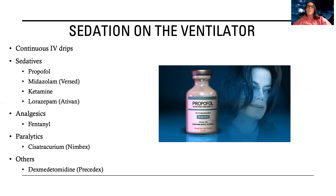All of these are continuous IV drips, but some of them can also be given as an IV push. Most of the time when patients are on a ventilator, they need continuous sedation. The different classes of medications we can use include sedatives, analgesics, paralytics, and other medications that are more like anti-anxiety. Let's break these down into the different classes.